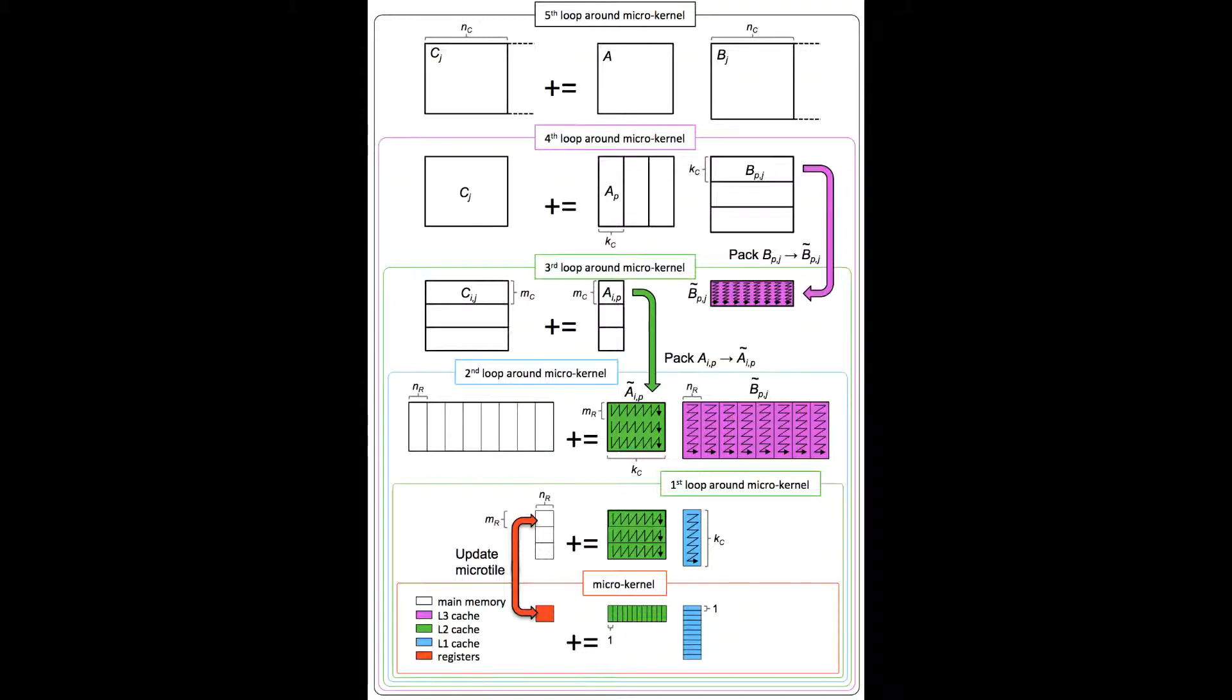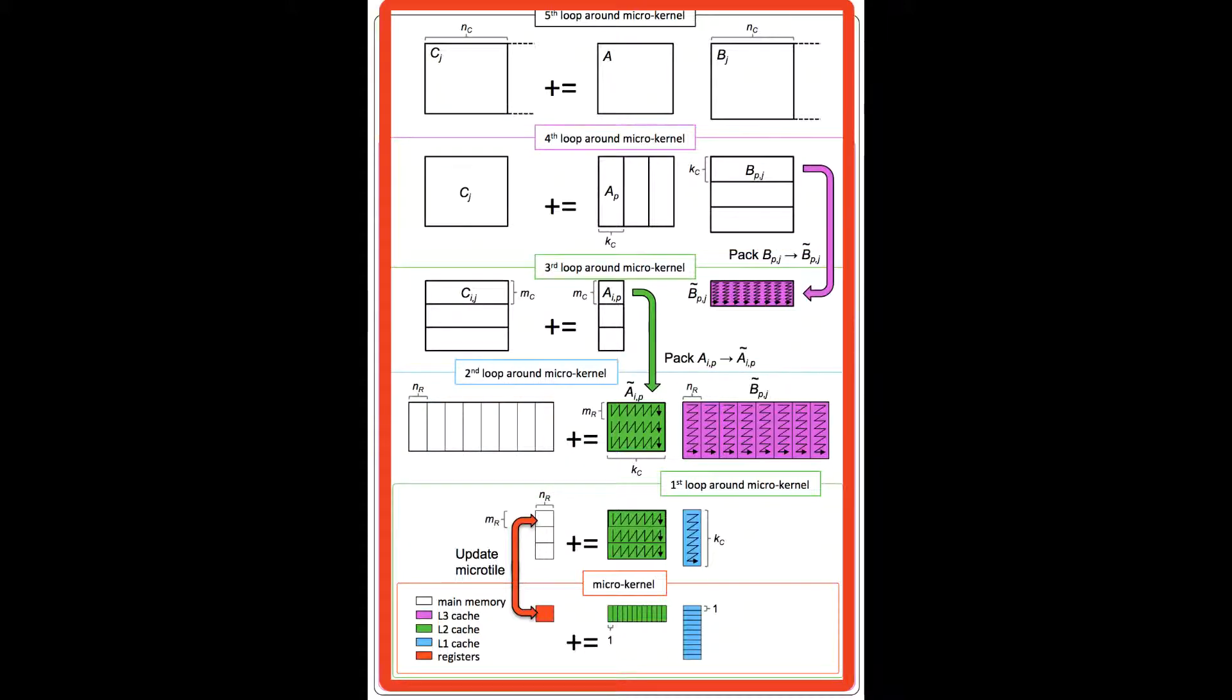Which loop should be parallelized? The first loop around the microkernel? The second? The third? The fourth? Or the fifth?